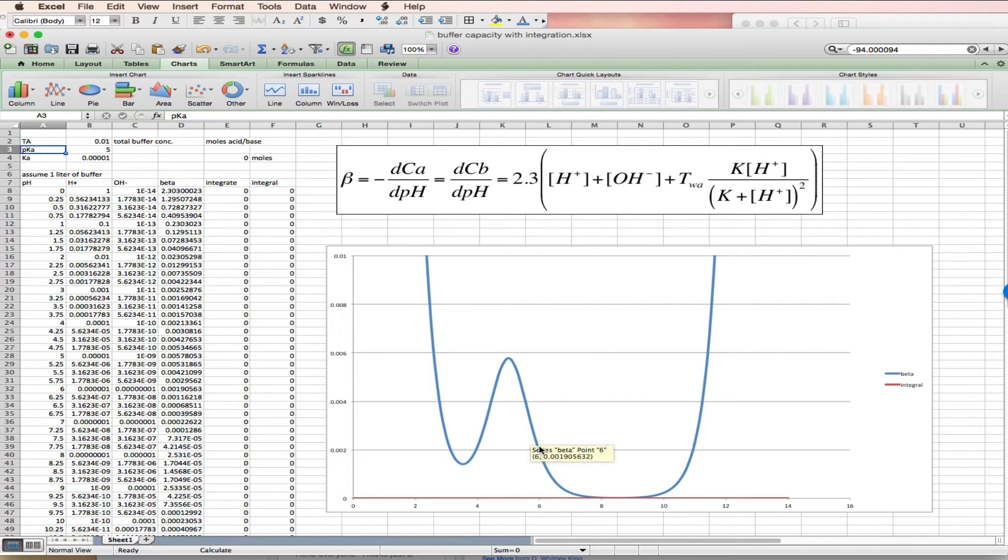you're better to make a buffer where the pKa of your weak acid is slightly below the pH of your experiment.